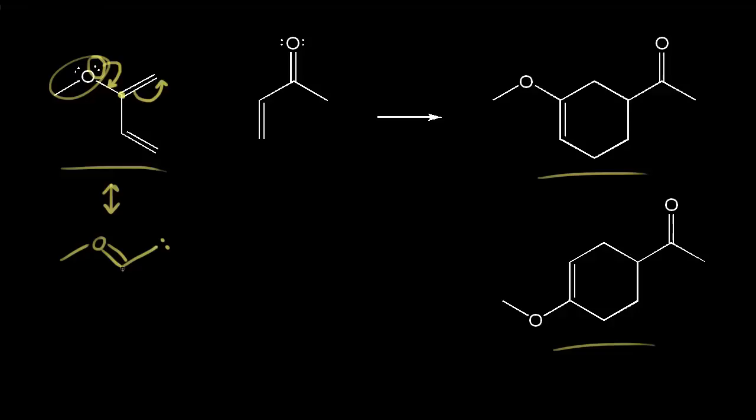And this oxygen still has one lone pair of electrons on it, which gives this oxygen a plus one formal charge. And this carbon would get a negative one formal charge. This carbon right here gets a negative one formal charge. Let me draw in my resonance brackets here.